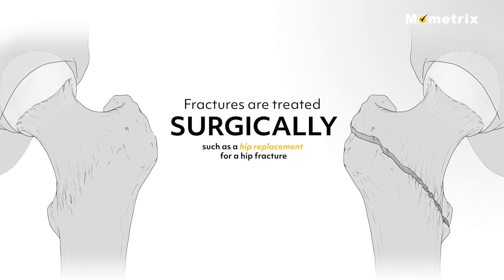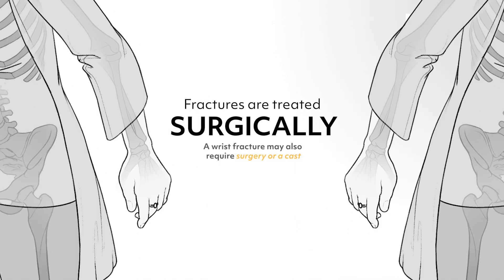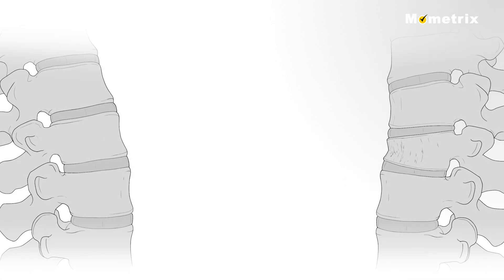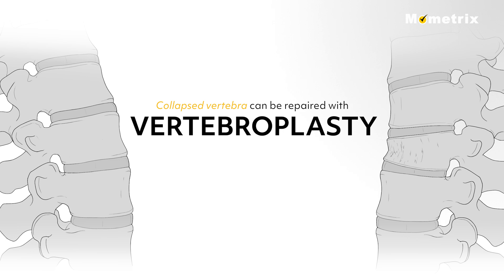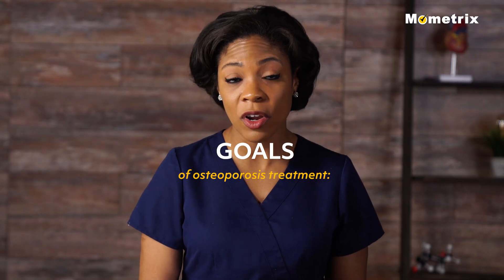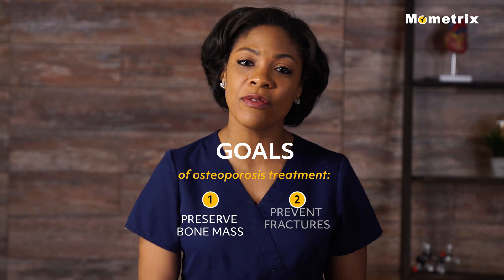Treatment for fractures is done surgically, such as a hip replacement for a hip fracture. A wrist fracture may also require surgery or a cast. Collapsed vertebrae can be repaired with vertebroplasty, in which an acrylic bone cement is injected into the collapsed vertebrae to help relieve pain and reduce deformity. The goals of osteoporosis treatment are to preserve bone mass and prevent fractures.